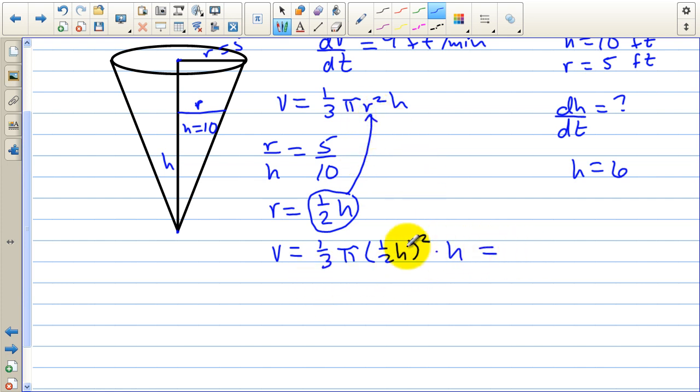Now we're going to simplify this. 1 half squared is 1 fourth times 1 third is 1 12th. And then we have pi h to the third. So that is what we're going to take the derivative of. So we have dv dt. Remember we're taking this derivative implicitly because we're taking the derivative with respect to time and we don't see time or a t in this equation at all. So we have 1 fourth pi h squared dh dt.